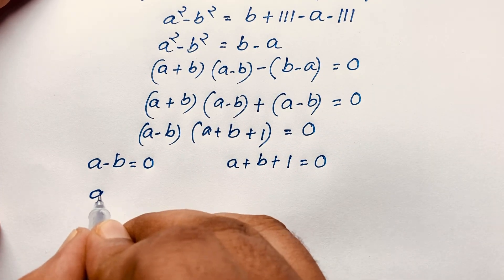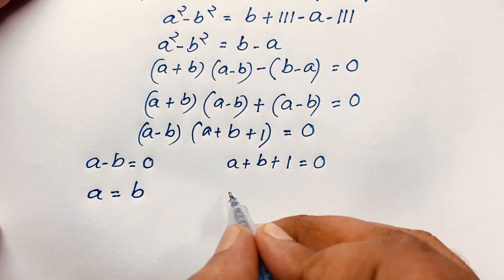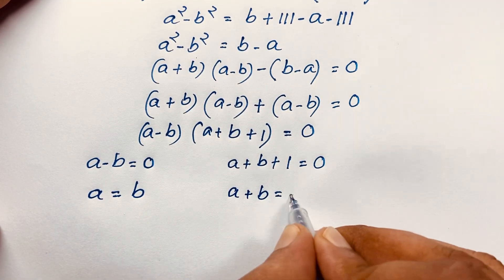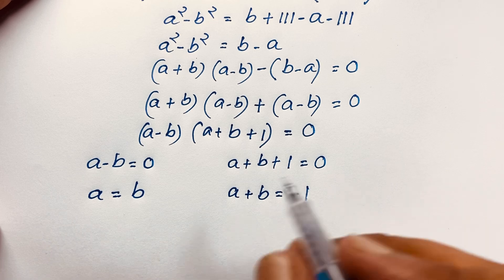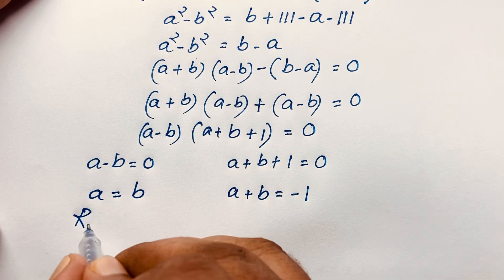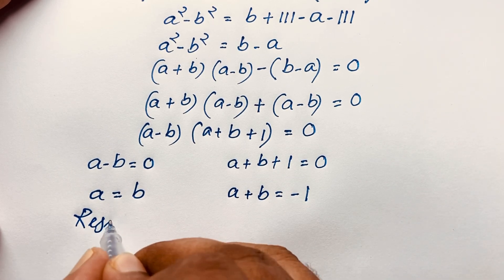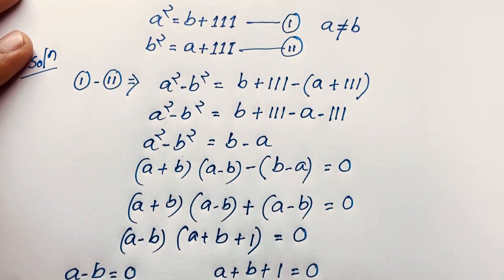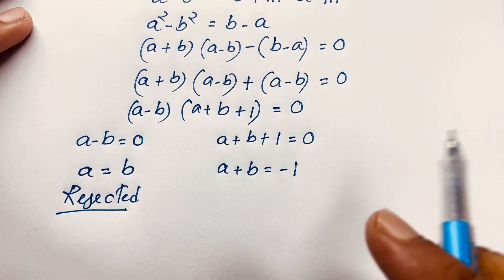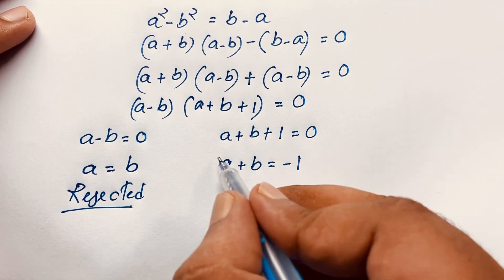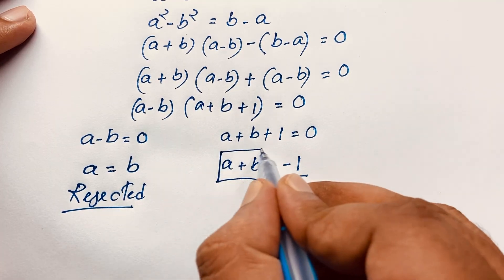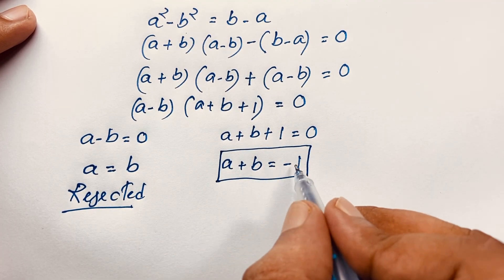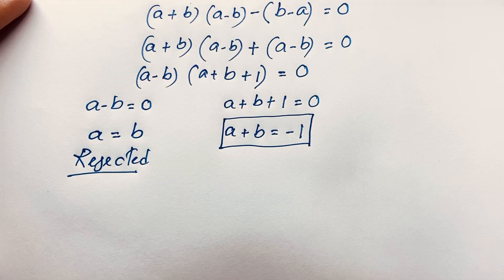From the first case, a minus b equals 0 gives a equals b. But we were told that a is not equal to b, so this case is rejected. From the second case, a plus b plus 1 equals 0, which means a plus b equals negative 1.